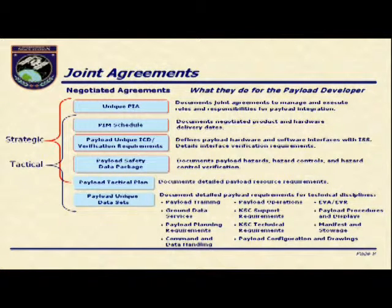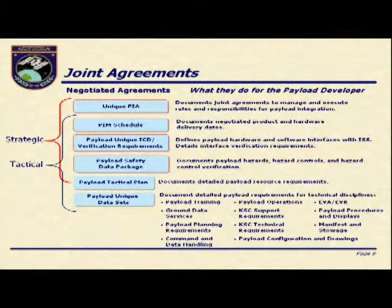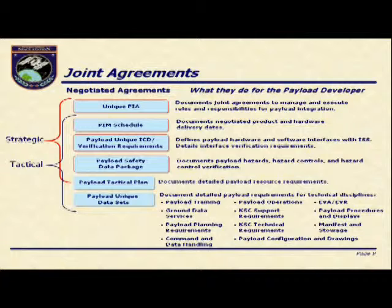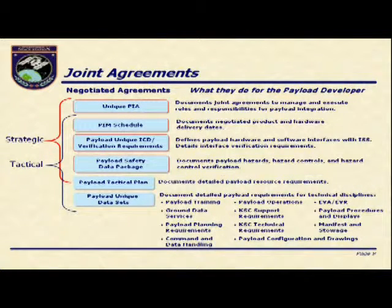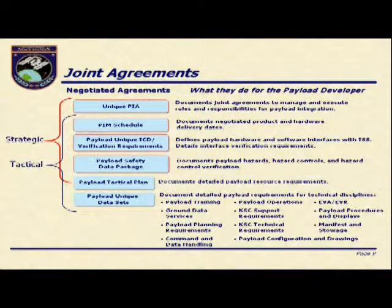The payload tactical plan is where we're looking for the majority of your integration data. We'll be looking for details on the manifest — what items you want to fly, how big they are, what they weigh, your crew time requirements, and any operations required in a partner vehicle. All those things get baselined in the payload tactical plan. Beyond that, there are unique payload data sets depending on your requirements — the individual details for procedures, planning data, and KSC technical requirements.